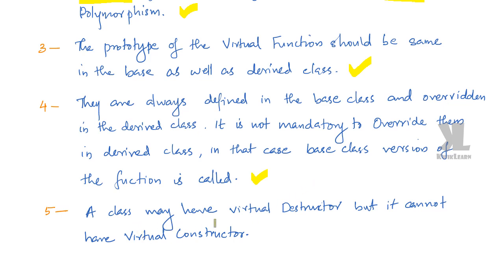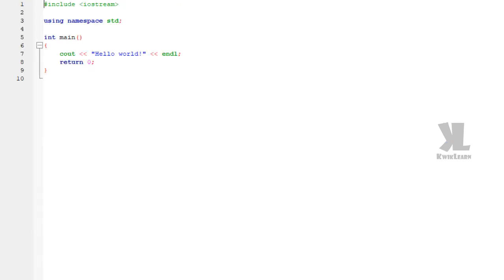A class may have a virtual destructor but it cannot have a virtual constructor. If we want to achieve runtime polymorphism, we can define a virtual destructor. Let's go to our IDE.